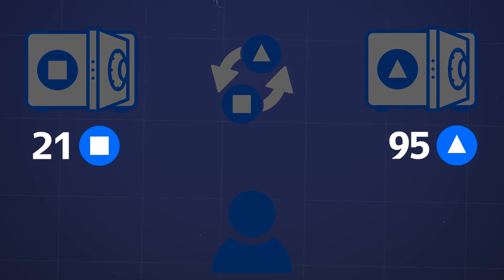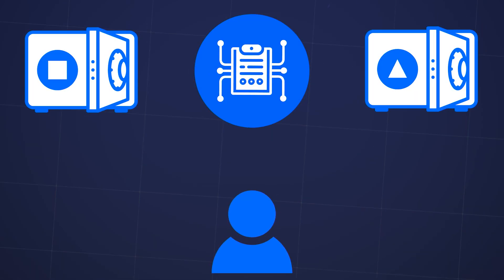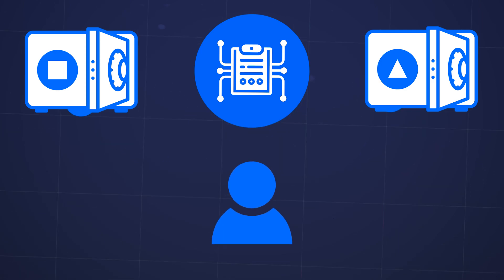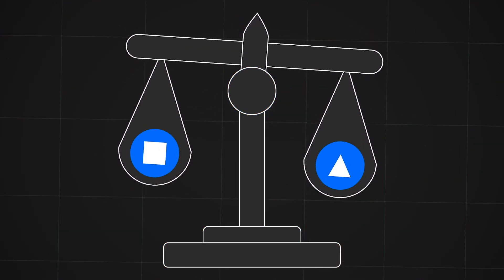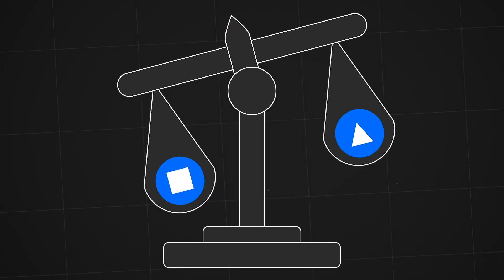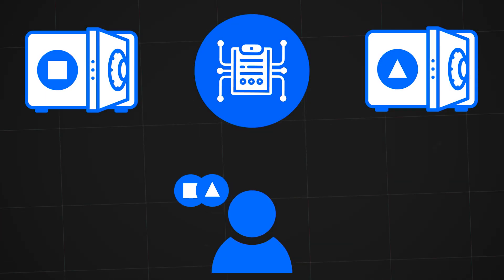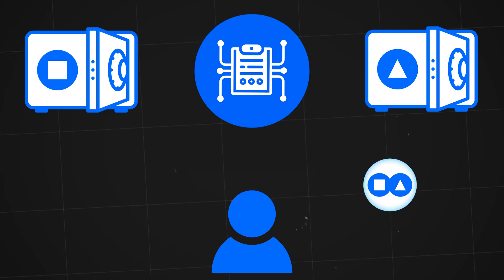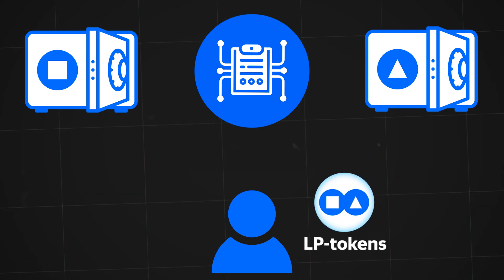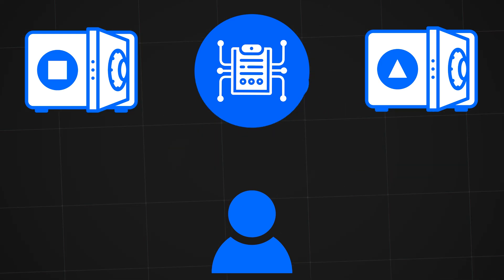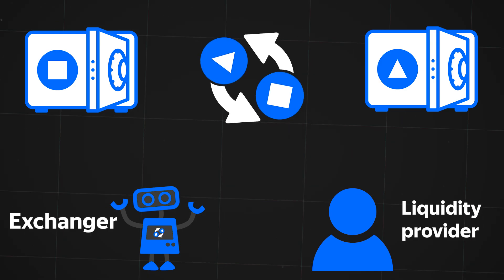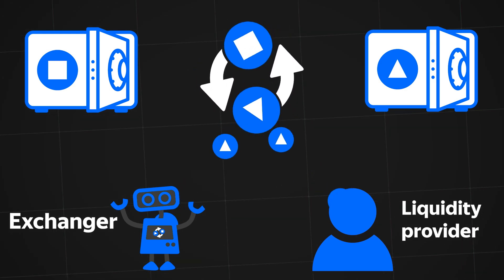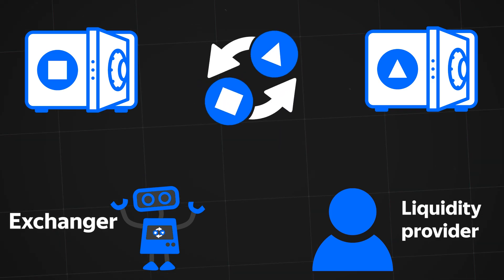Where do these tokens in the vaults come from? They are sent to the liquidity pool by ordinary users called liquidity providers. In most of these systems, to provide liquidity a user must send an equal amount of each token in dollar terms to the pool. This means that if a user wants to send $1,000 to the liquidity pool, they will need to send $500 in one token and $500 in another. In return for the provided liquidity, users receive so-called LP tokens, which act as a receipt with which the user can withdraw their tokens from the pool. For the provided liquidity, users are rewarded with commissions from each exchange in their trading pair. Also, some of the commissions are held by the decentralized exchanger itself.